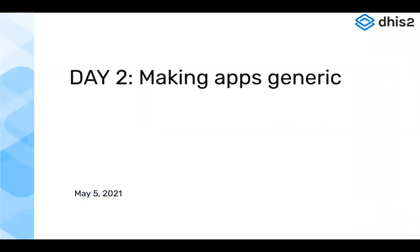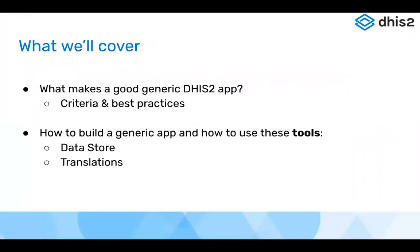We're going to learn how to make generic applications in DHIS2. I'll start off by giving a quick overview of what makes a good generic application, then talk about the requirements, and briefly mention some of the approaches you can take when developing your application. After the break, Austin will expand on this introduction and talk more about how to use the available tools, including the data store and how to support translations.